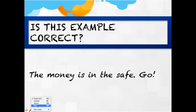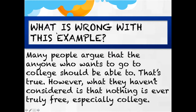Is this next example correct? Yes, it actually is. When you look at the three rules: first, it has a single word — 'Go' — standing on its own. Second, it conveys a complete idea within context: 'The money is in the safe. Go.' Maybe this is a bank robber giving commands, or someone telling an employee to retrieve money — it makes sense within context. Third, it's used for dramatic effect, like an exclamation.